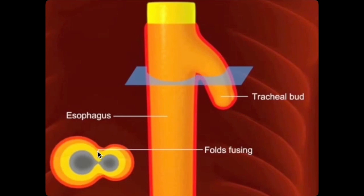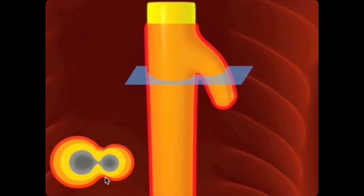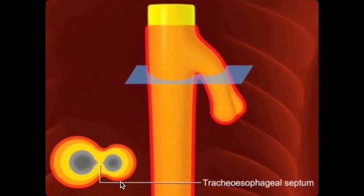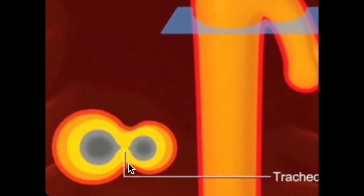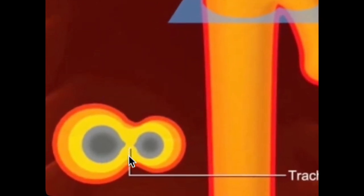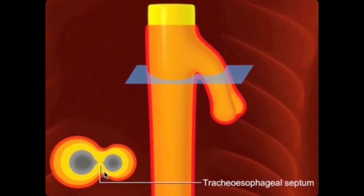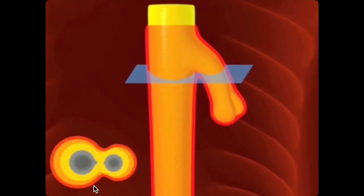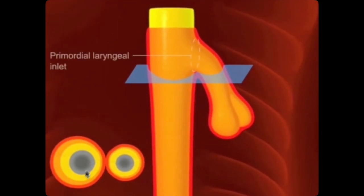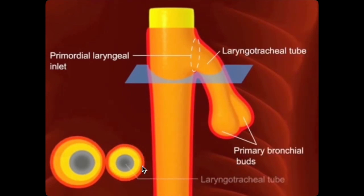These tracheoesophageal folds will continue to pinch, and at the end of week five they fuse to form the tracheoesophageal septum. It is named that because it partitions the dorsal esophagus from the laryngotracheal tube. The laryngeal inlet cranially, of course, remains open.